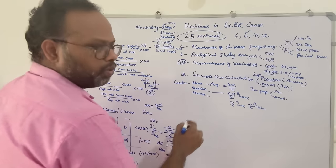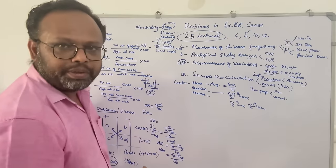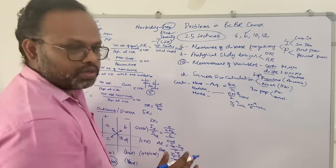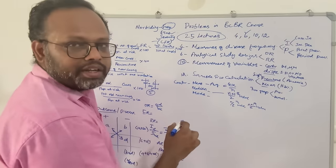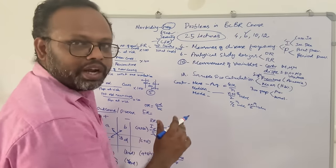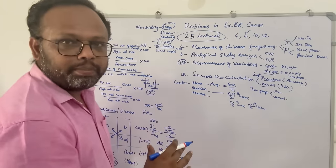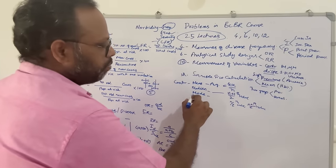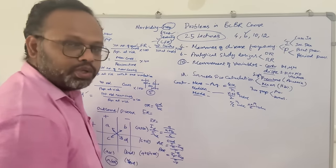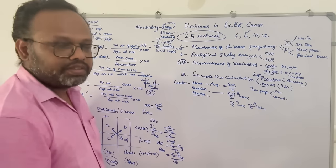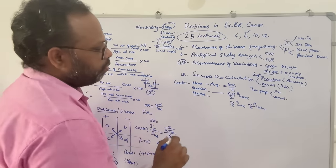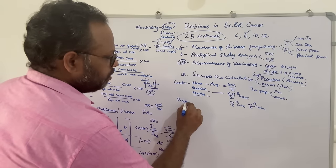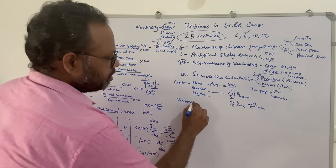Mode is the most repeated value. When arranging values in ascending or descending order, you can identify the most frequently repeated value — that is the mode. That is how you calculate the measures of central tendency: mean, median and mode.